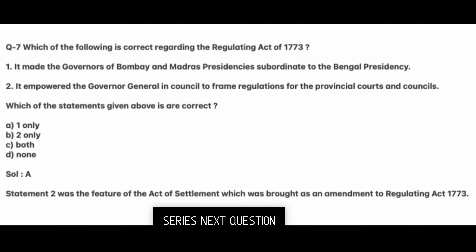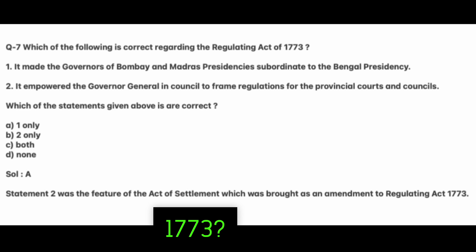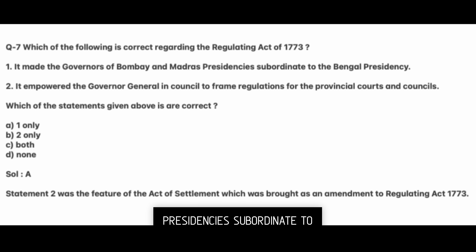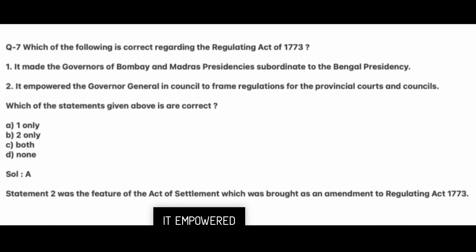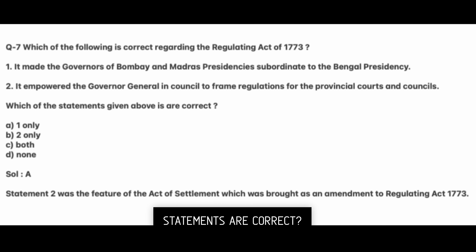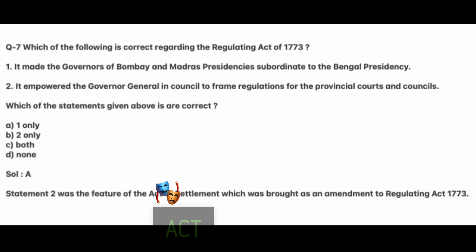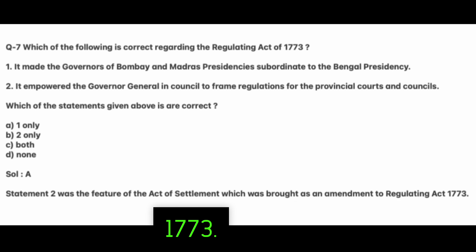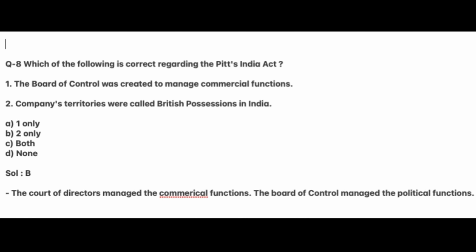Quality series question: Which of the following is correct regarding the Regulating Act of 1773? One, it made the governors of Bombay and Madras presidencies subordinate to the Bengal presidency. Second, it empowered the Governor General in Council to frame regulations for the provincial courts and councils. Answer: Statement two was a feature of the Act of Settlement, which was brought as an amendment to the Regulating Act of 1773.